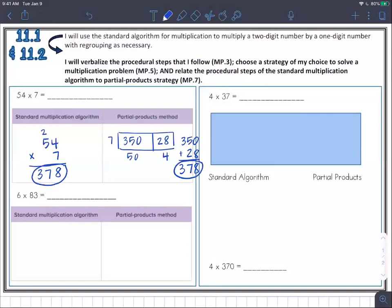One more down here: 6 times 83. We are going to write it this way: 83 times 6. 3 times 6 is 18. I do need to regroup. 8 times 6 is 48, plus 1 is 49. If it helps you to cross out the number at the top when you regroup, you can do that so you know you've taken care of it.